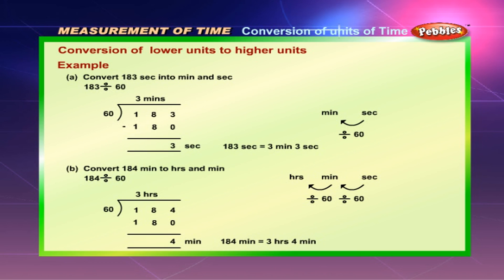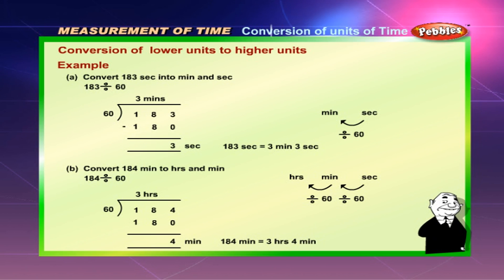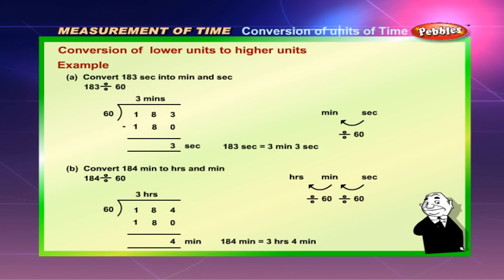Conversion of lower units to higher units. Example: Convert 183 seconds into minutes and seconds. 183 divided by 60 — 183 seconds is equal to 3 minutes and 3 seconds. Convert 184 minutes to hours and minutes. 184 divided by 60 — 184 minutes is equal to 3 hours and 4 minutes.